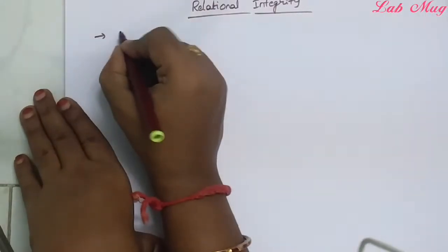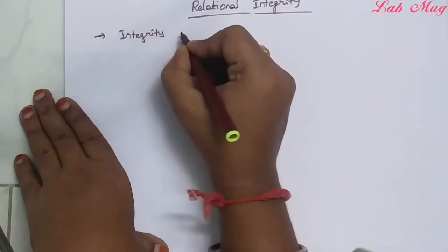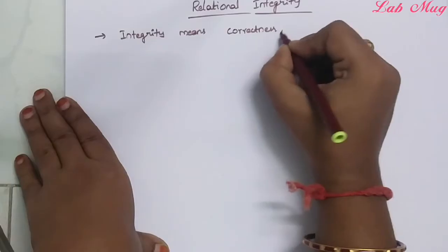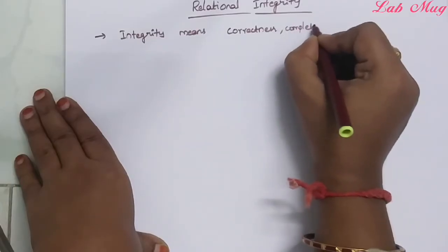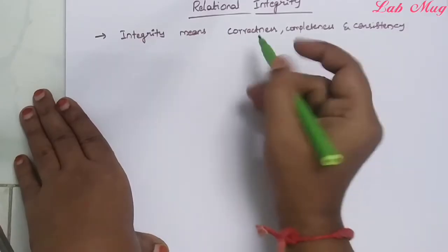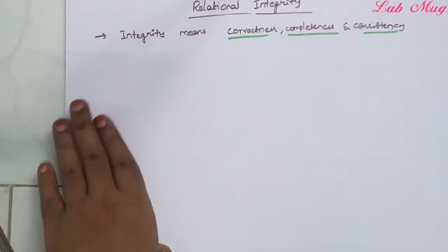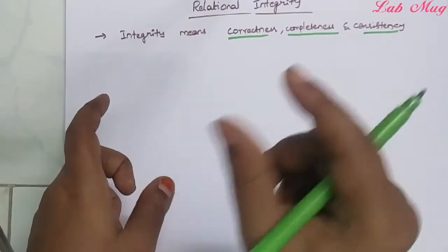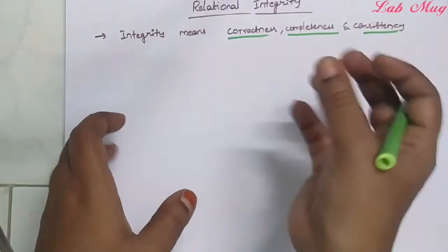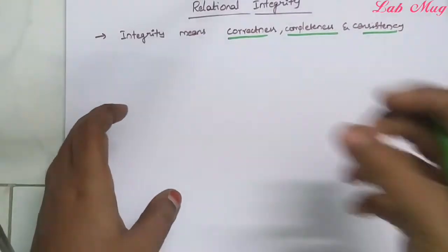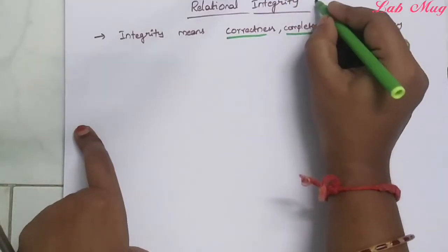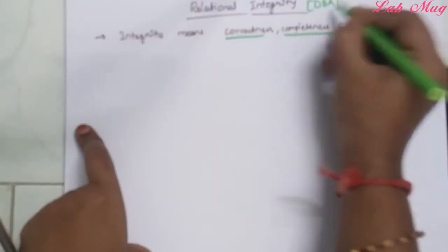Integrity means correctness, completeness and consistency. All-dimensional integrity is right up to the database, which the database manager maintains. The DBA maintains the total integrity concepts in the database.